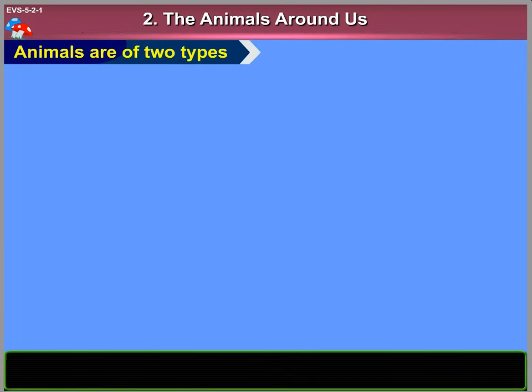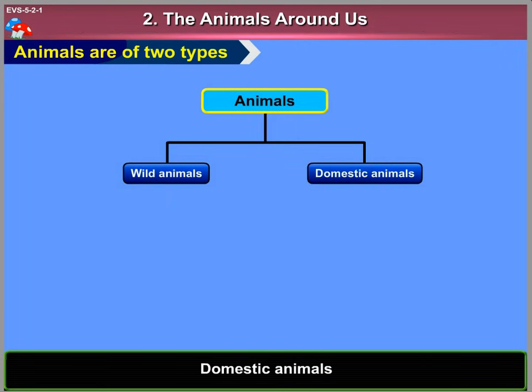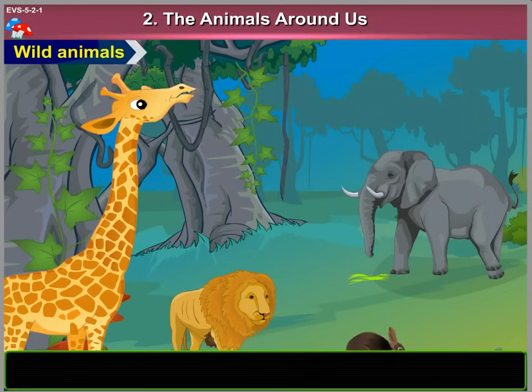Animals are of two types: 1. Wild animals, and 2. Domestic animals.